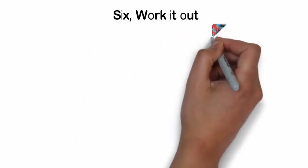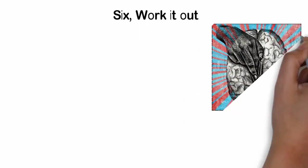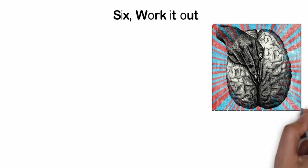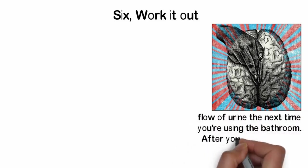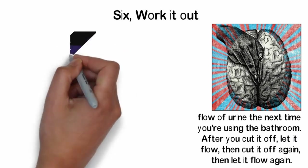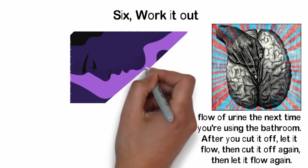Sixth, work it out. Work out your pubococcygeal muscles of the pelvic floor and work them out well. To understand what these muscles feel like when they're fired up, try to cut off the flow of urine the next time you're using the bathroom. After you cut it off, let it flow, then cut it off again, then let it flow again. For help isolating those PC muscles, try standing in front of a mirror and using them to lift your testicles, without the help of your hands.